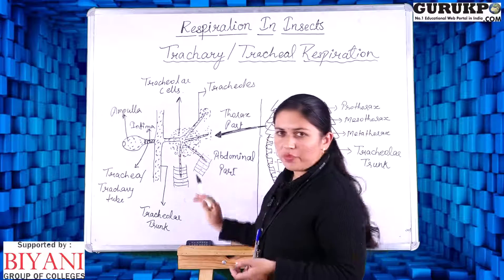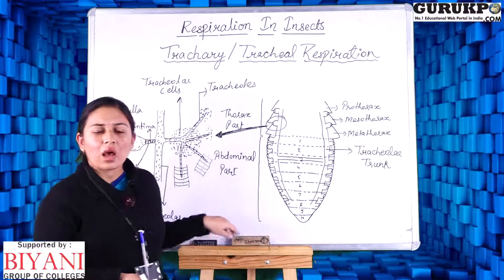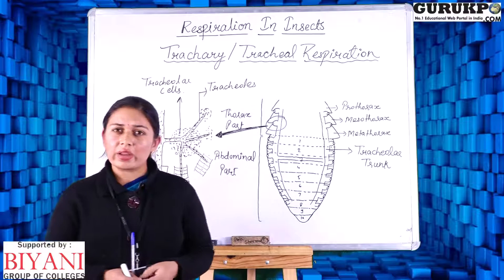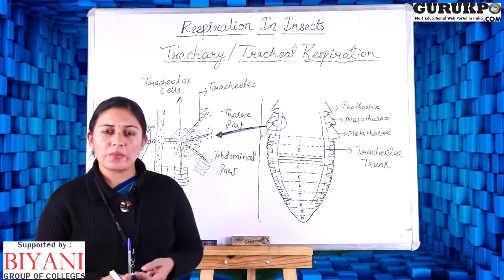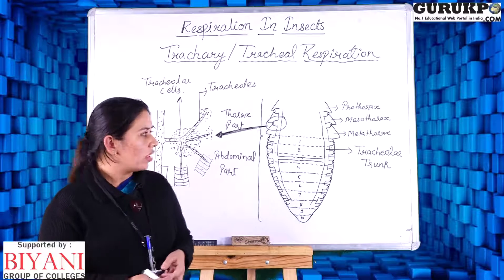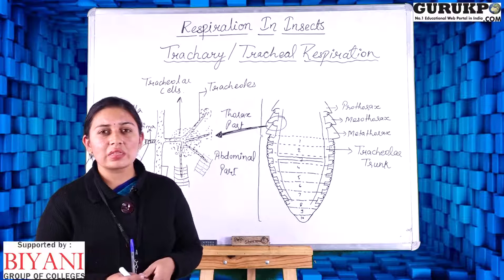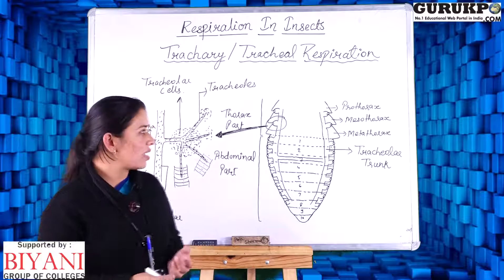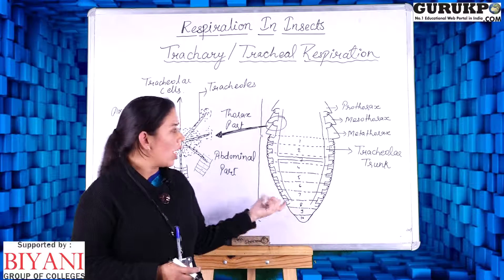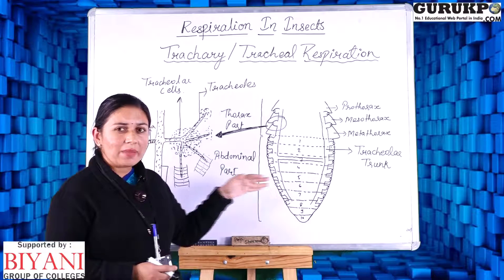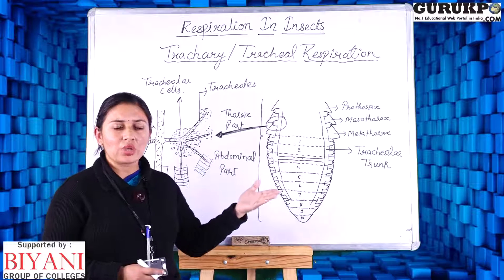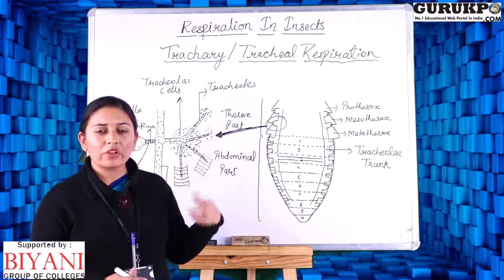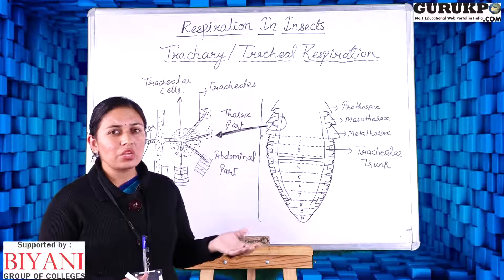This is the structure of the respiratory organ. Now we will see how the process of respiration takes place in the insect body. The process of respiration is divided into two main parts. The first is the process of inhalation and exhalation, which takes place when the insect is in a moving or active state. At that time all the spiracles get open and air passes directly through the spiracle, then to the ampulla, then to the tracheary tubes, and finally reaches the cells and tissues.